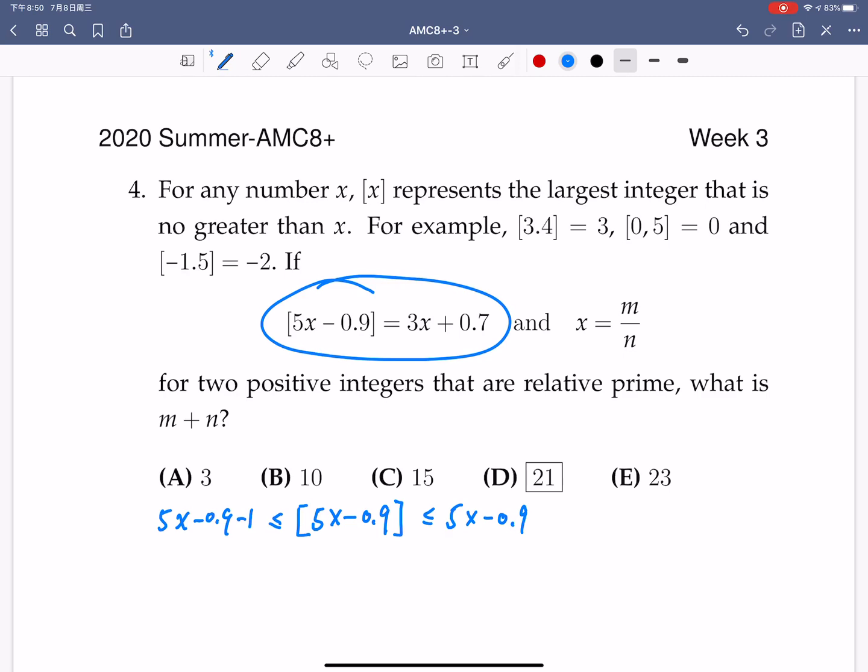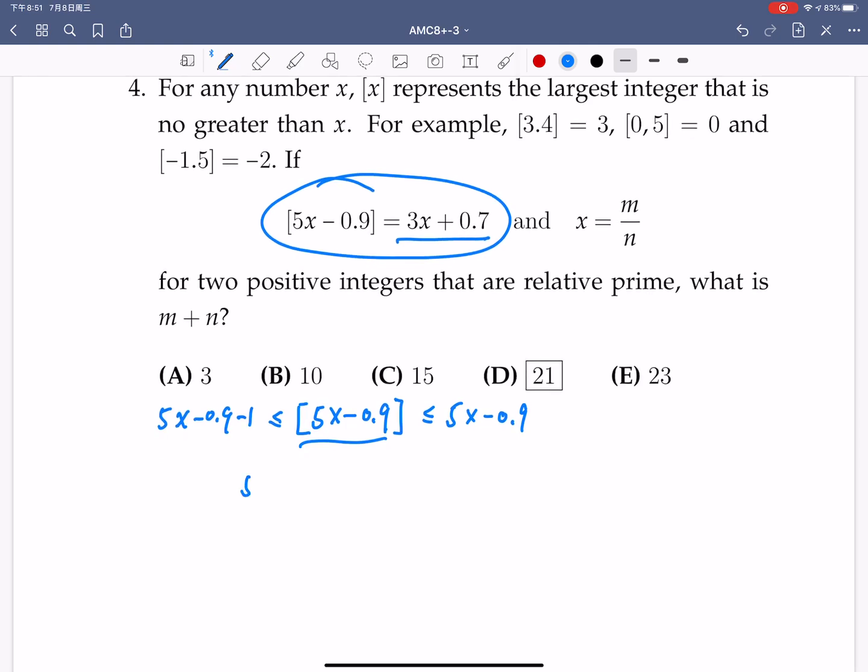So therefore, we have the inequality since what in the middle is equal to 3x plus 0.7. We get 5x, so this is 1.9, is less than 3x plus 0.7, which is less than 5x minus 0.9. So we then have subtract 3x on all these three inequalities, we get 2x minus 1.9 less than 0.7, is less than 2x minus 0.9.